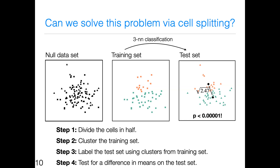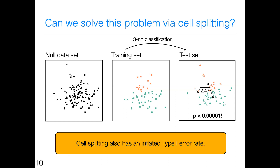The answer to what went wrong has to do with step three. I needed some way to label the test set observations using those clusters from the training set. But any way I can think of to transfer those labels involves the physical position of the test set observations. So step three is performing double dipping — I've actually double dipped the test data in the act of doing step three. This doesn't depend on the choice of three nearest neighbors classification. The point is: no, we cannot solve this problem via cell splitting. We need something more sophisticated.